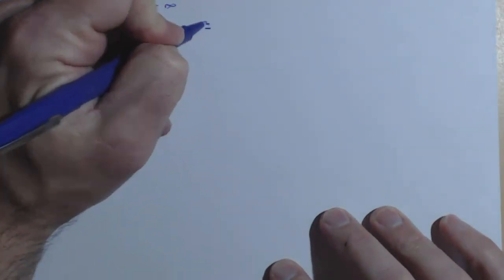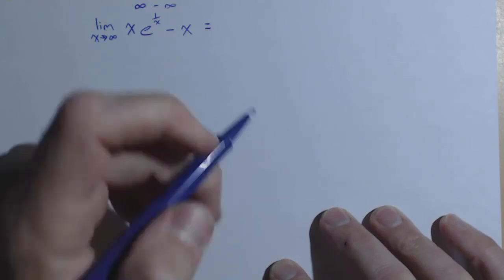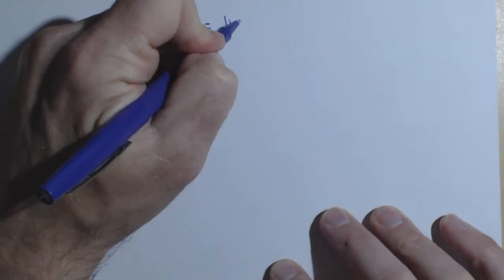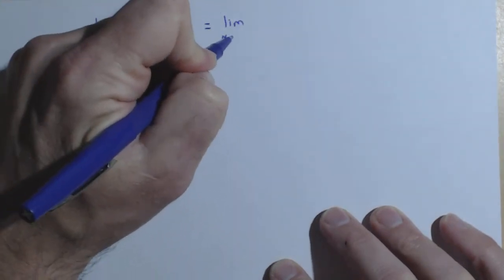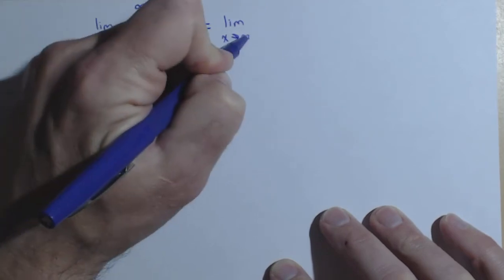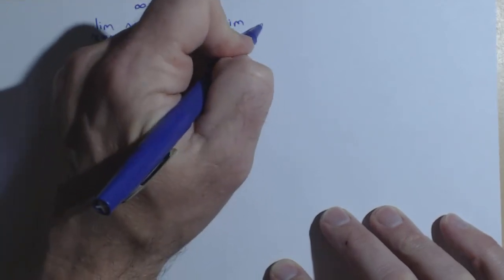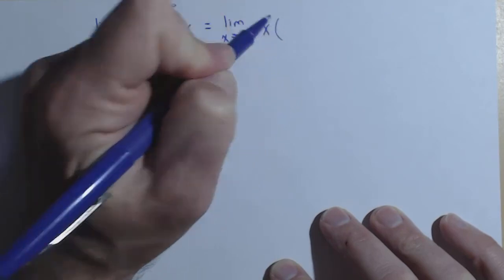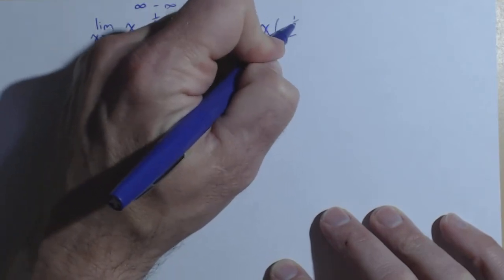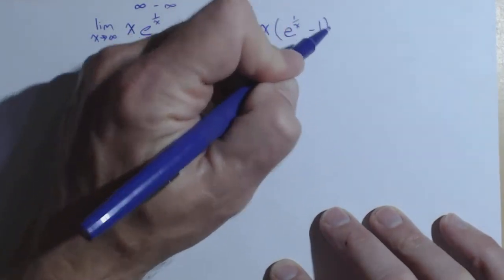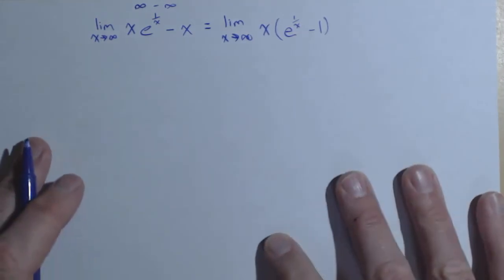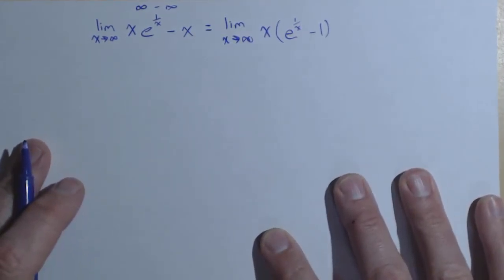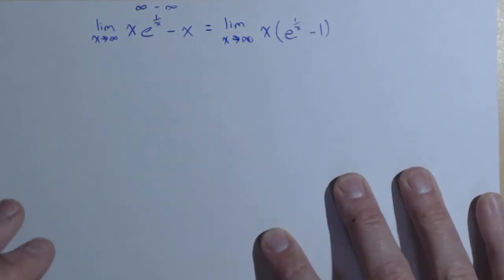So let's talk about how we can rewrite it. One of the first things I can do that might make it a little easier to look at, I get limit as x goes to infinity, I'm going to factor out an x and see what happens. So x times e to the one over x minus one. You may have to play around with these a little bit to figure out where you want to go with it, so there is some trial and error with L'Hopital's rule.